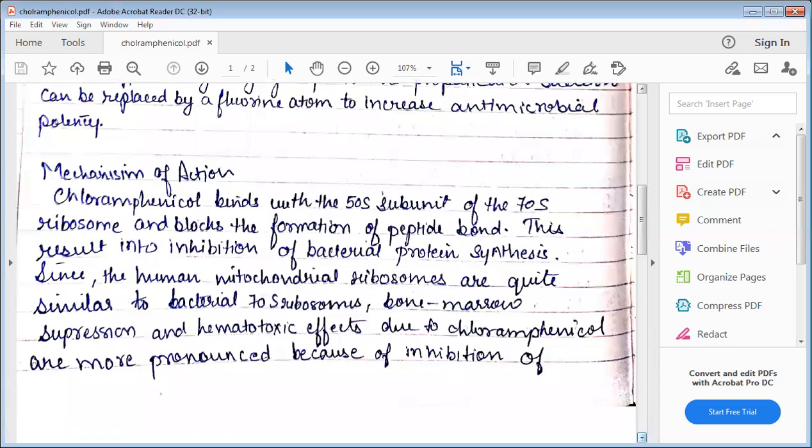Chloramphenicol binds with the 50S subunit of the 70S ribosome and blocks the enzymatic transfer of peptides into inhibition of bacterial protein synthesis.